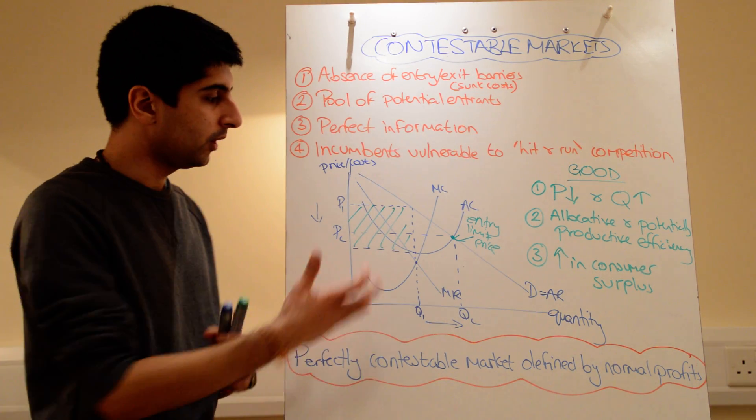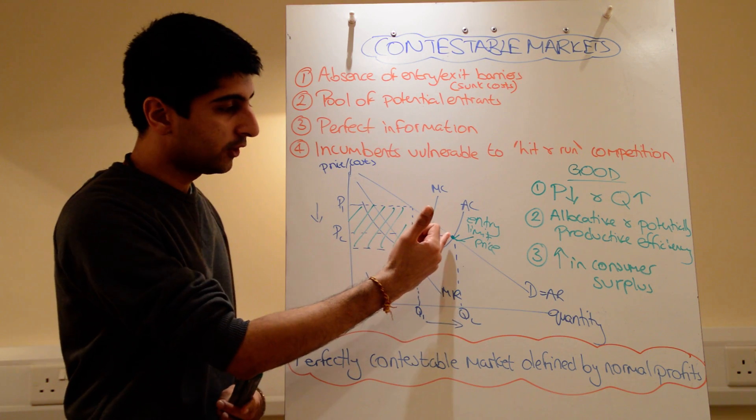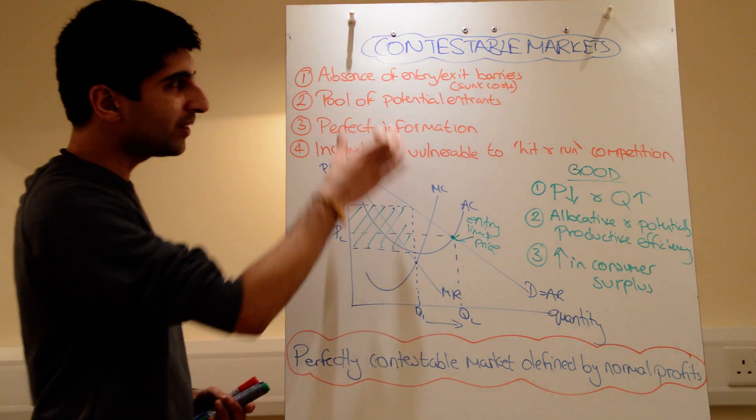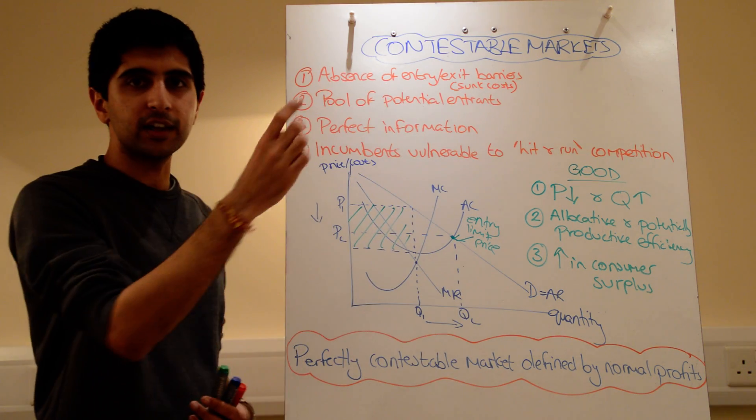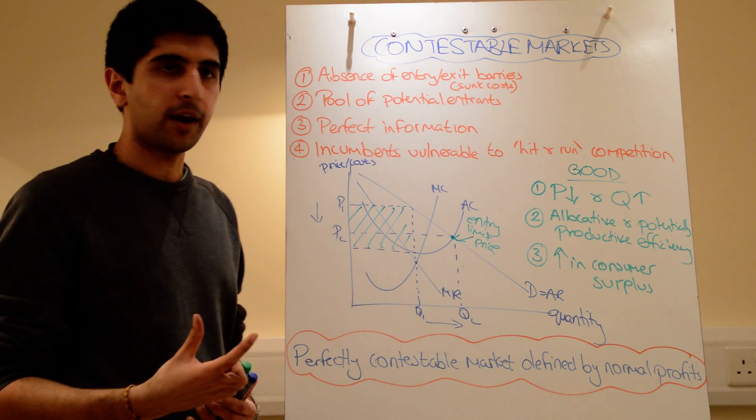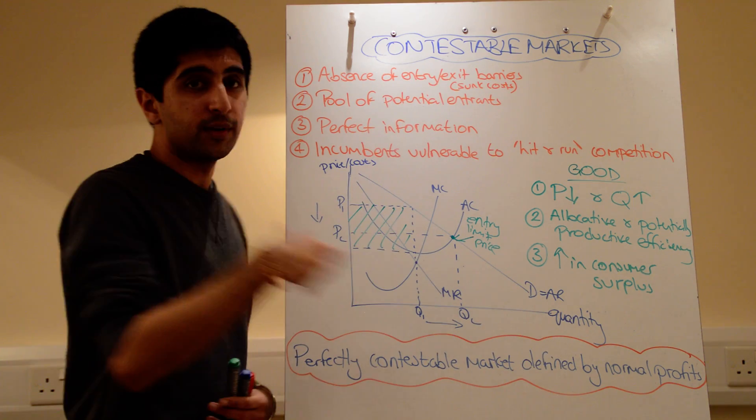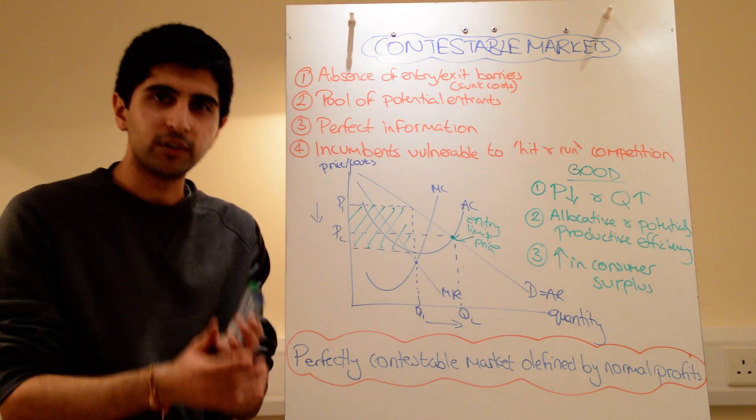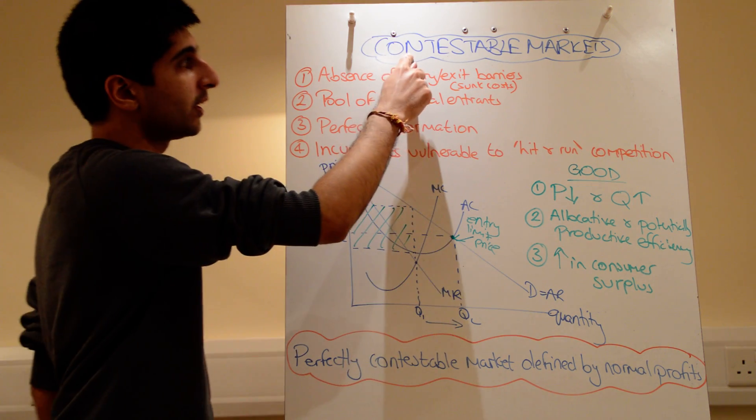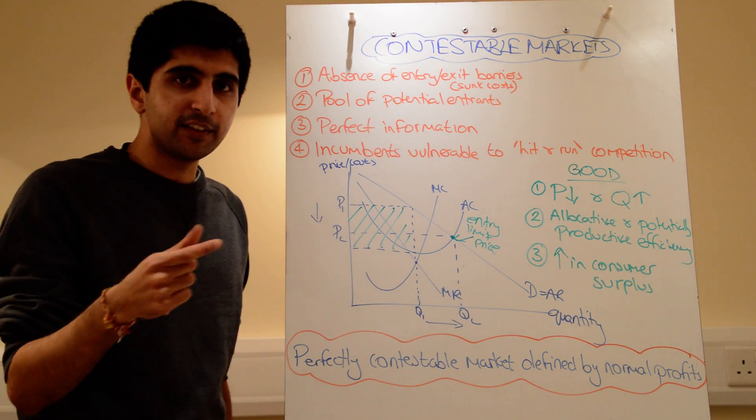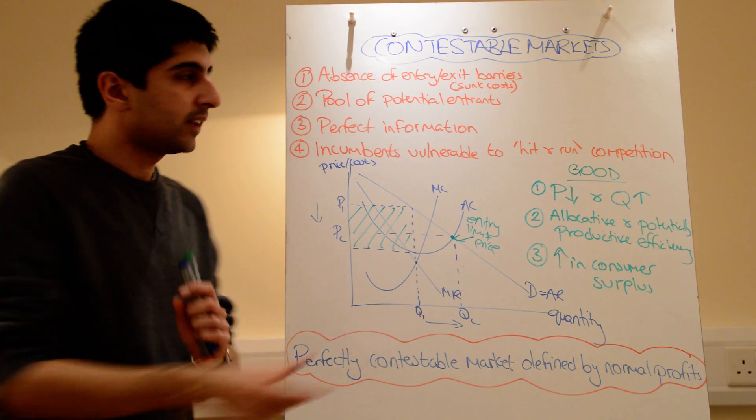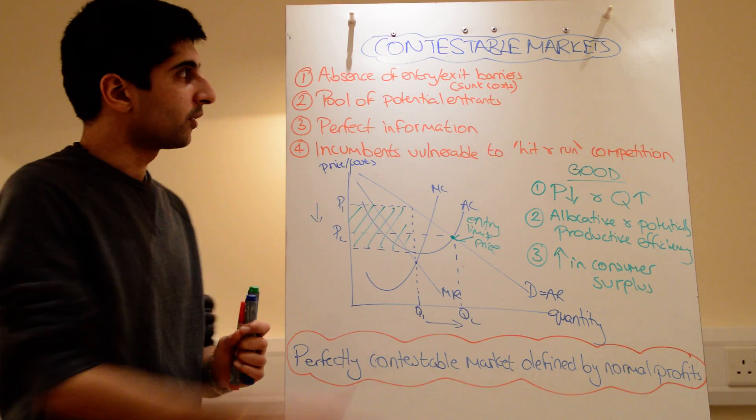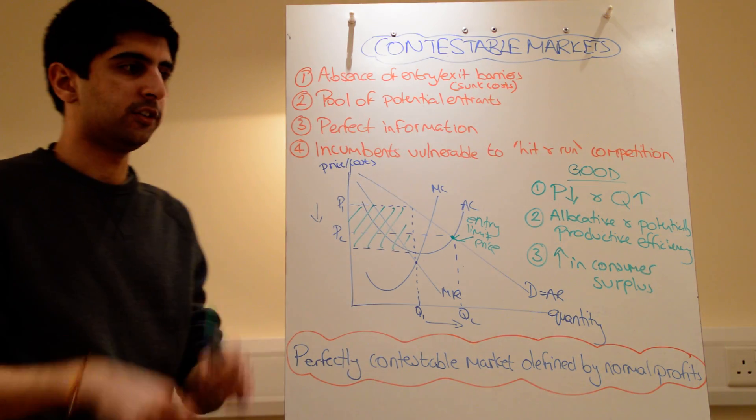So as long as the market is contestable, prices will move closer towards the normal profit level. And that's all simply because of this one key characteristic of an absence of entry and exit barriers. And that's what this theory is getting at. It's a potential threat that's more important than actual competition. So don't get confused between contestable markets and competitive markets. They're both very different. Contestable is all about the threat of entry, the threat of competition, whereas competitive markets is actual competition.